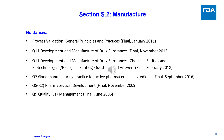Section S.2 guidances include: Process Validation General Principles and Practices; Q11 Development and Manufacture of Drug Substances; Q11 Questions and Answers; Q7 Good Manufacturing Practice for Active Pharmaceutical Ingredients; Q8(R2) Pharmaceutical Development; and Q9 Quality Risk Management.